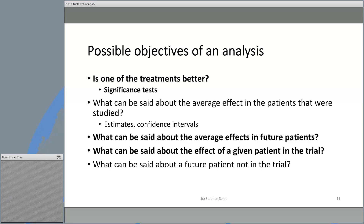Getting more ambitious: what can we say about the average effects in future patients? We could look at that in a number of ways — what can be said about the effect on a given patient in the trial, and what can be said about future patients not in the trial?